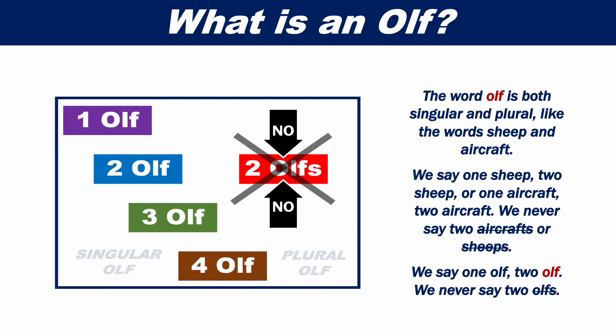The word olf is both singular and plural, like the words sheep and aircraft. We say one sheep, two sheep; one aircraft, two aircraft — we never say two aircrafts or sheeps. Similarly, we say one olf, two olf; we never say two olfs.